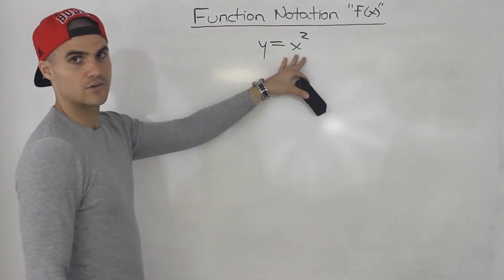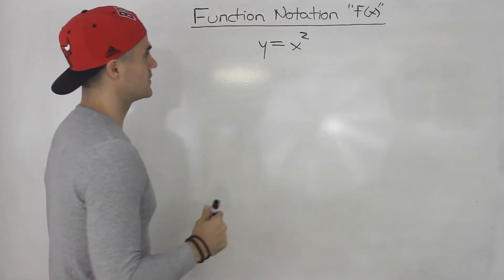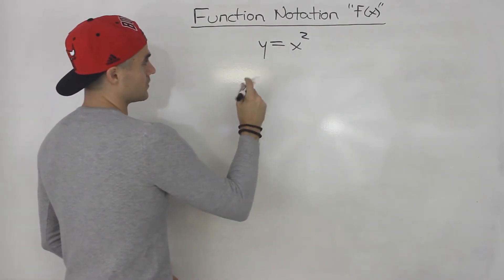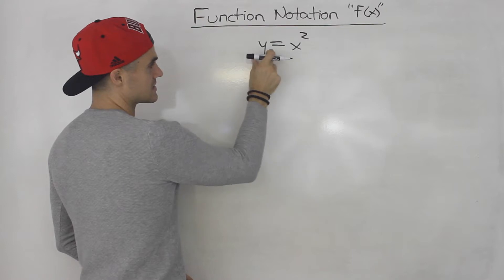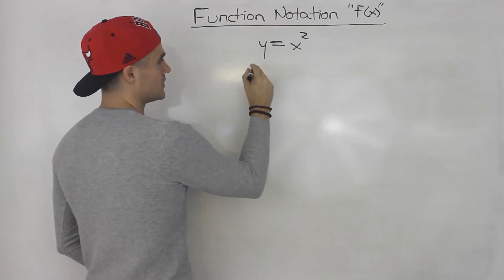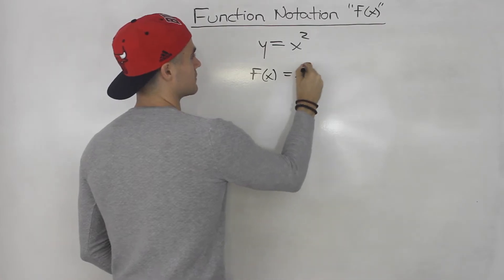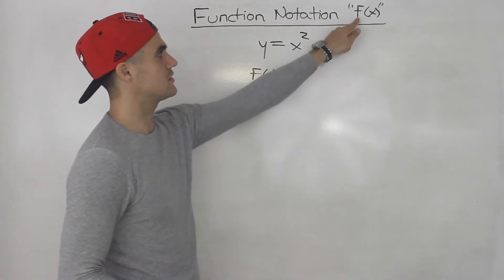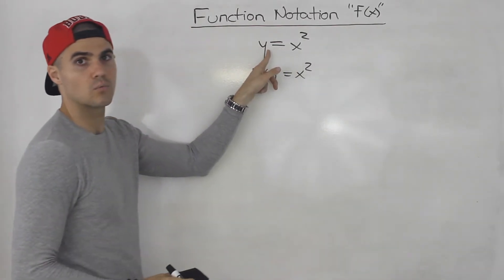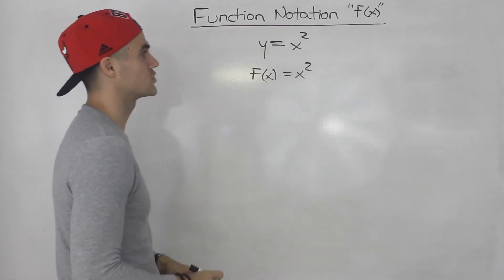Well, we know x squared is a function, as we mentioned in the previous section. So another way to write this is instead of writing y, we just write a function of x. This f of x here is just another way to write the y variable, the dependent variable for a function.